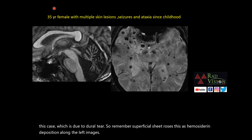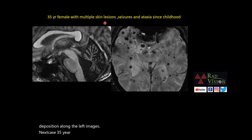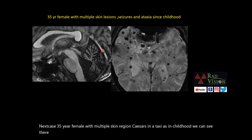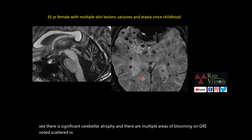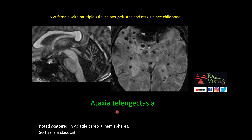Next case: a 35-year female with multiple skin lesions, seizures, and ataxia since childhood. There is significant cerebellar atrophy and multiple areas of blooming on GRE scattered in bilateral cerebral hemispheres — a classical case of ataxia telangiectasia.